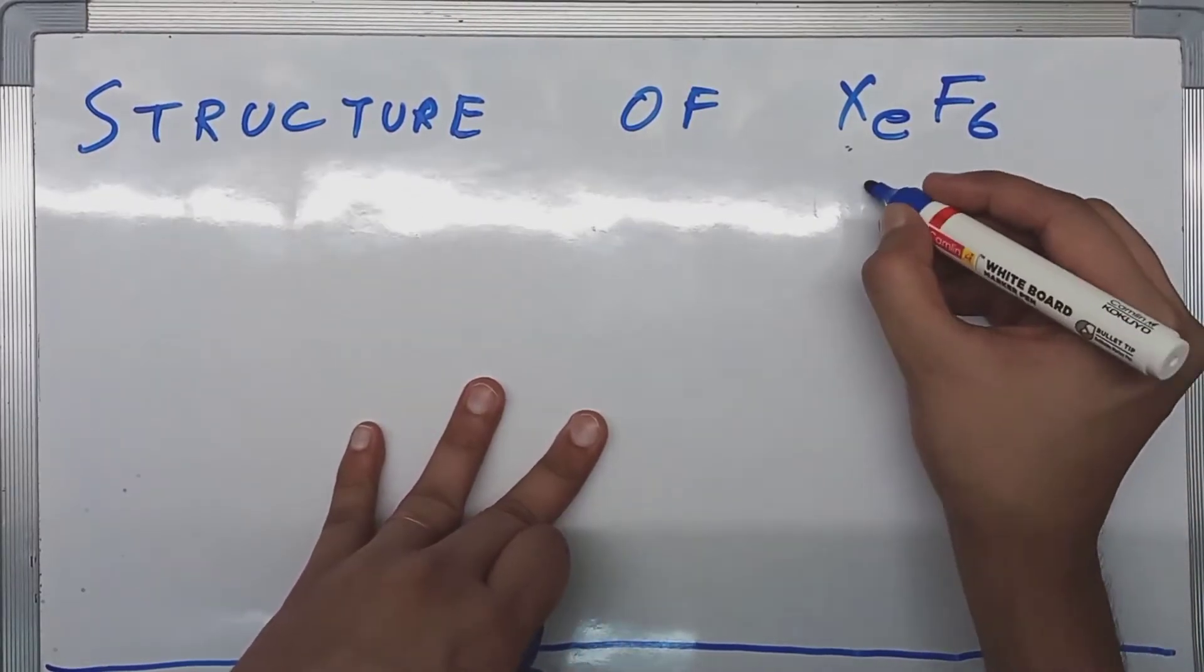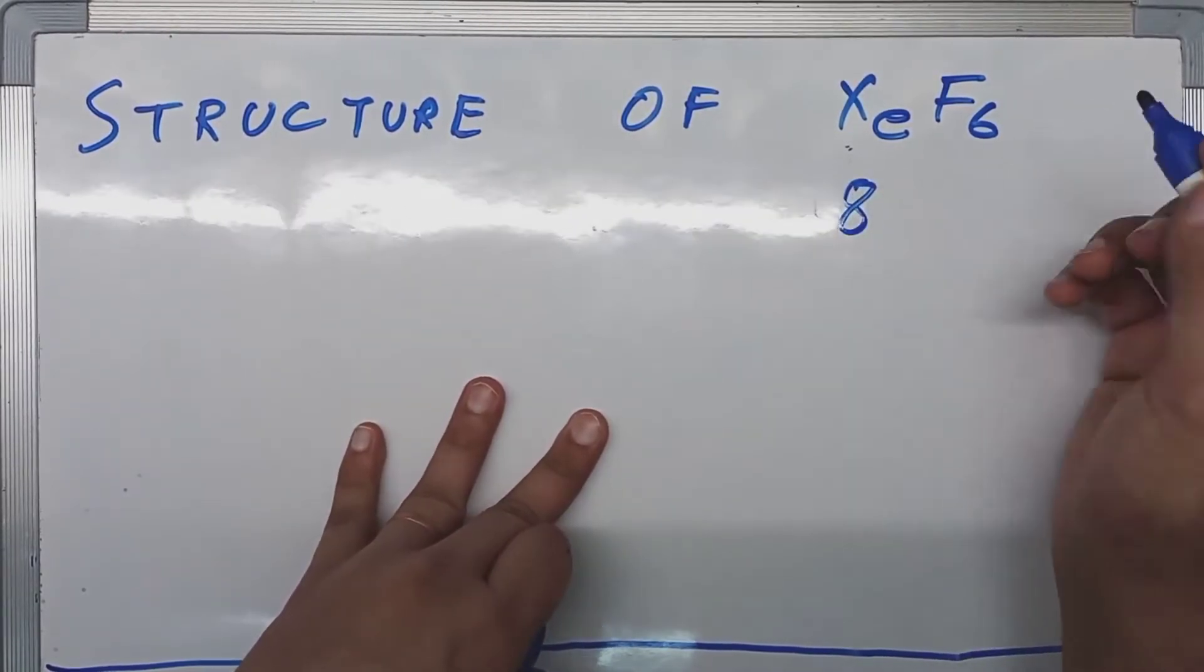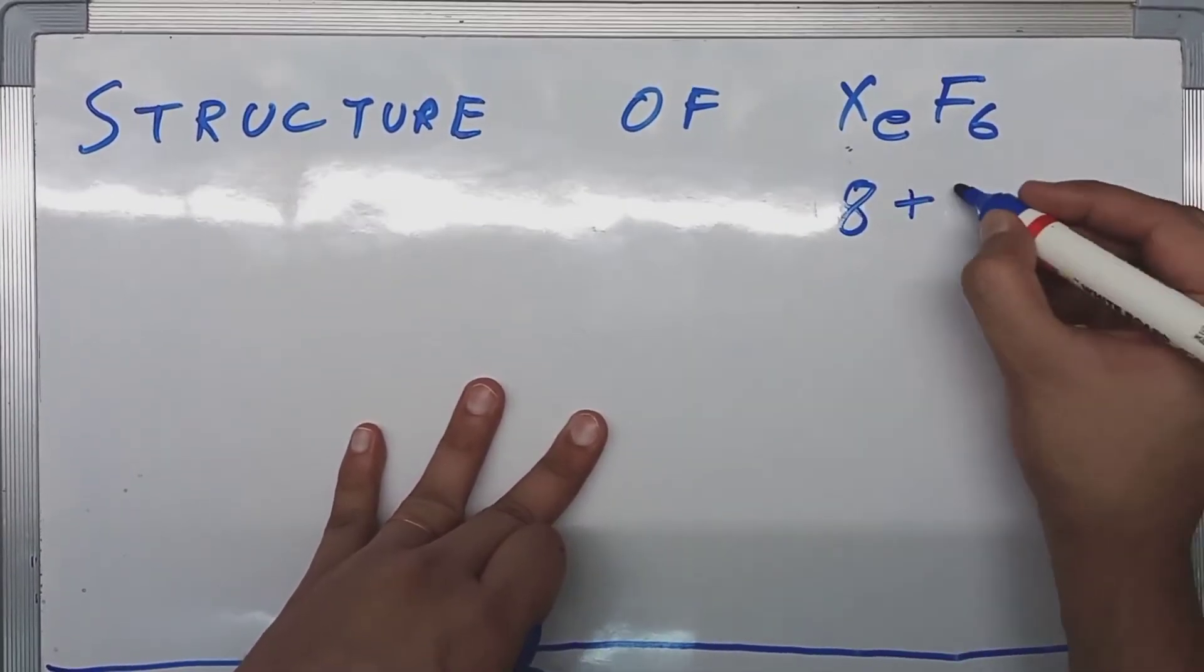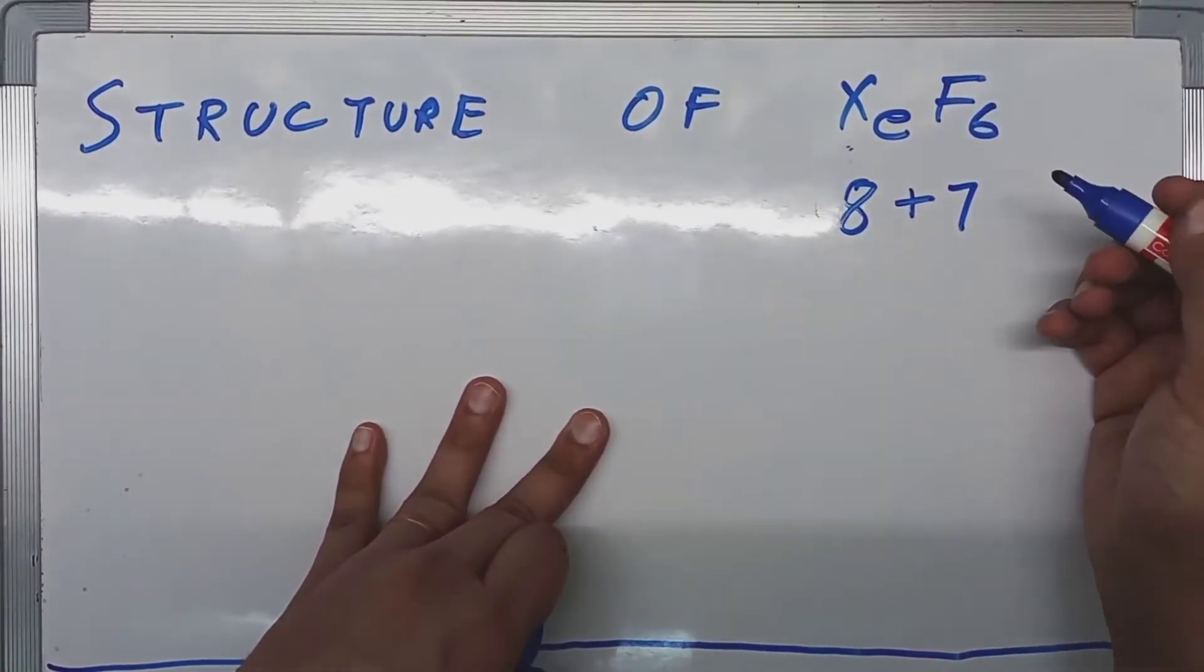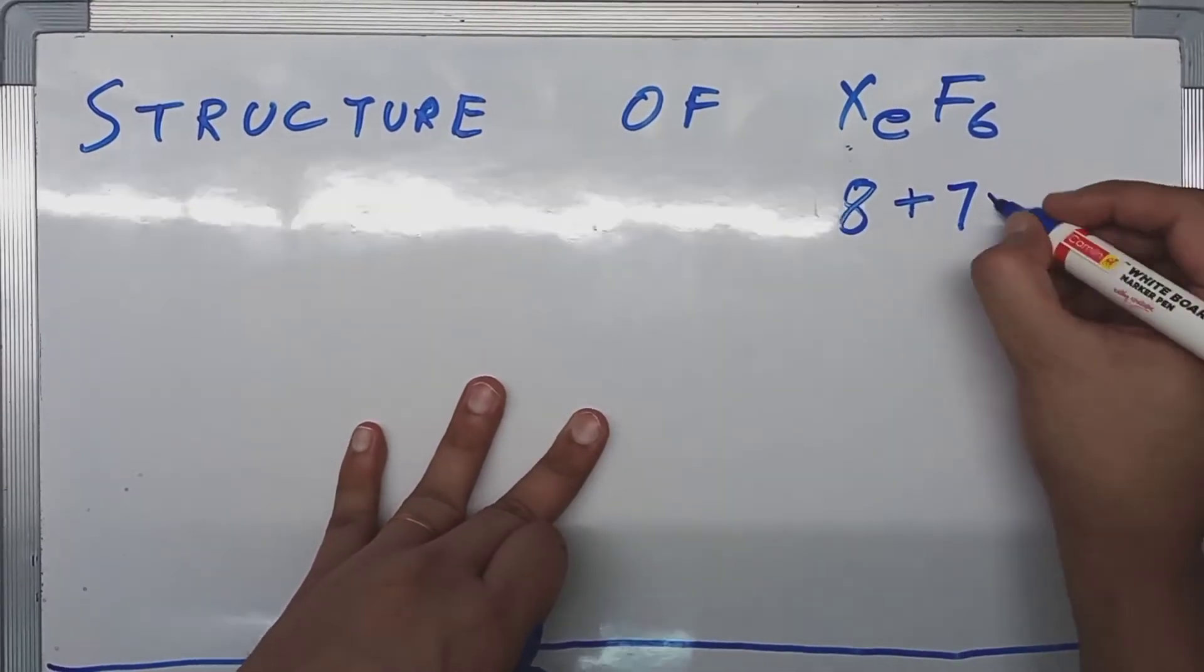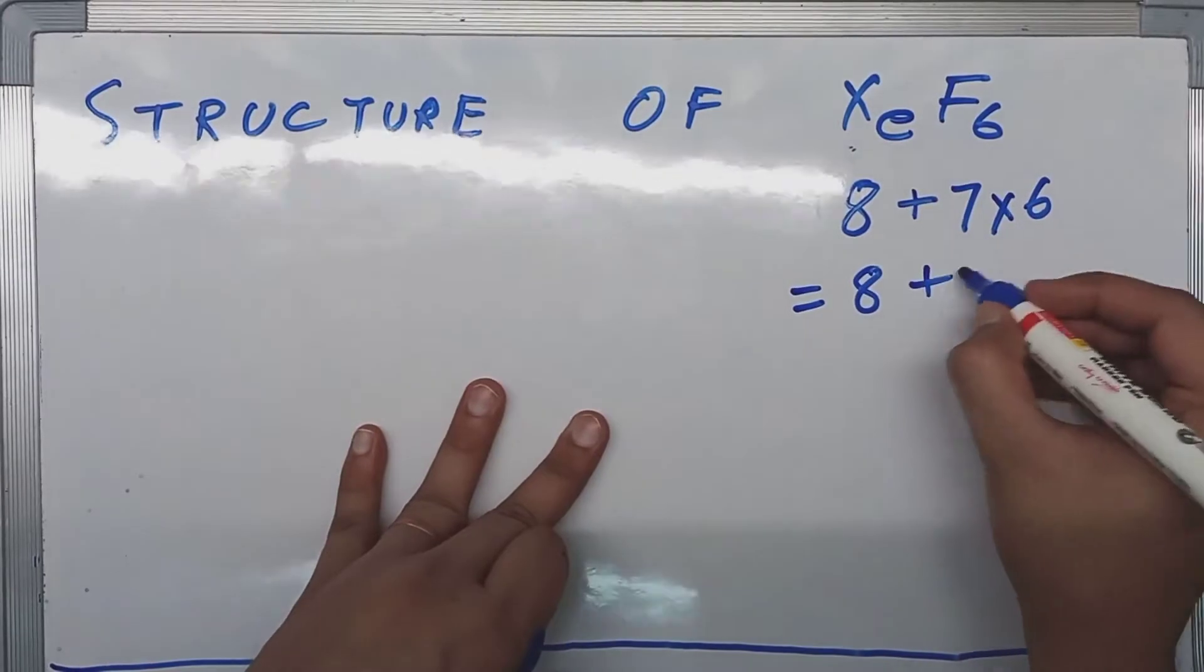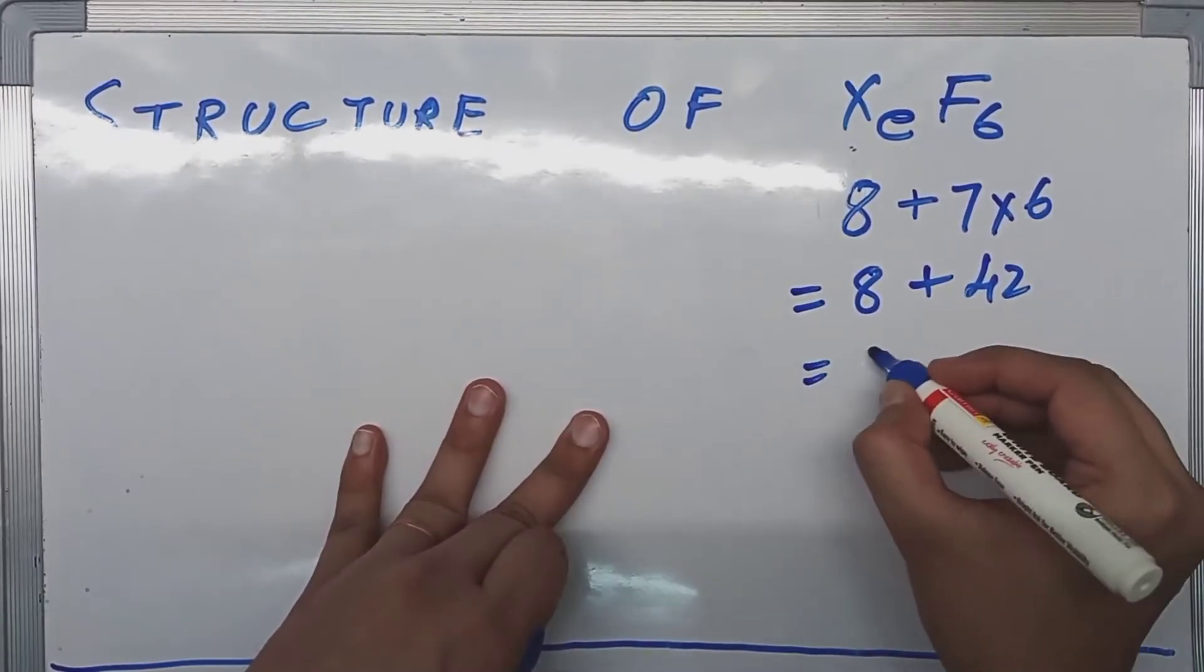Xenon has 8 valence electrons, so we are going to write 8, and fluorine has 7, so plus 7. But we have 6 atoms of fluorine, so times 6. Now, 8 plus 42 is equal to 50.